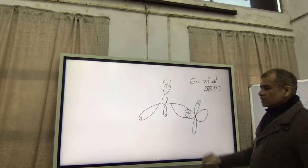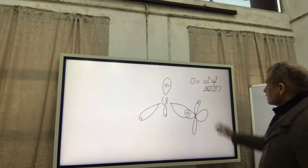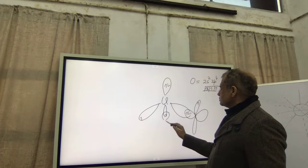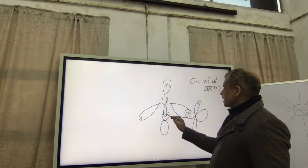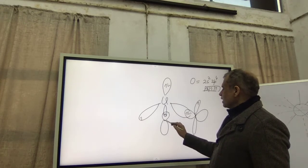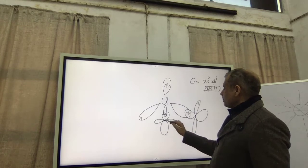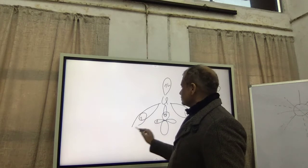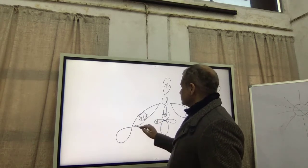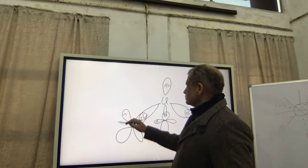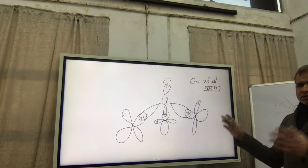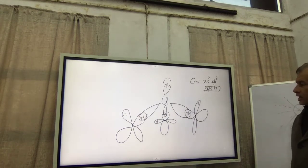The second oxygen will come here, make a sigma bond in the same way and the second oxygen is like this. The third will come like this. So three oxygen will come and join with the central atom.